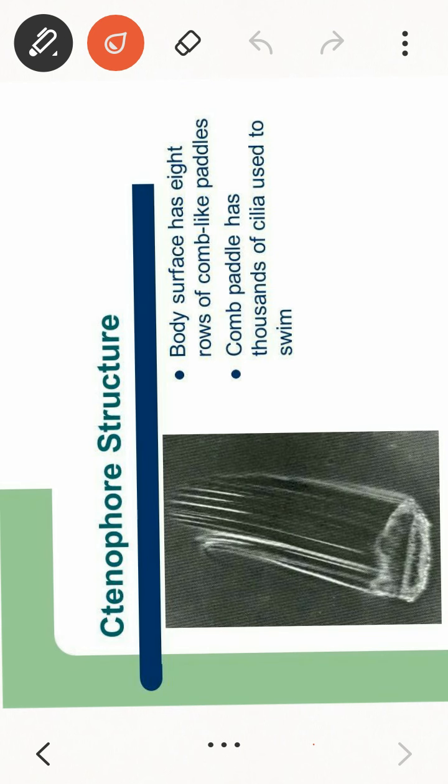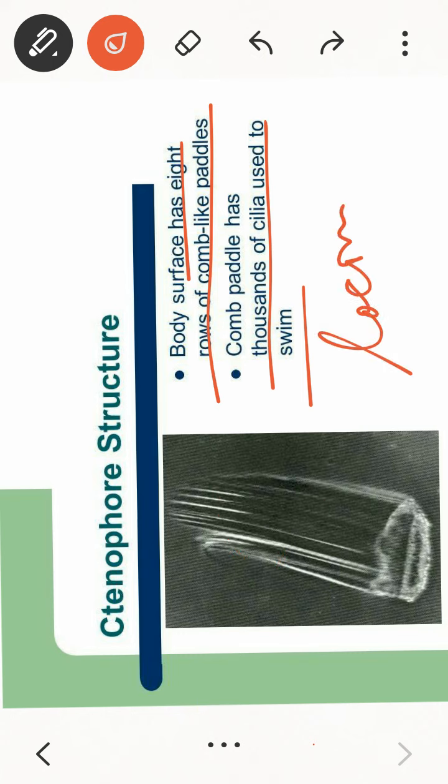You can see ctenophora structure. Body surface has eight rows. There are comb-like paddles or comb plates. There are thousands of cilia, a lot of small cilia. They help them in swimming, mainly you can say locomotion.